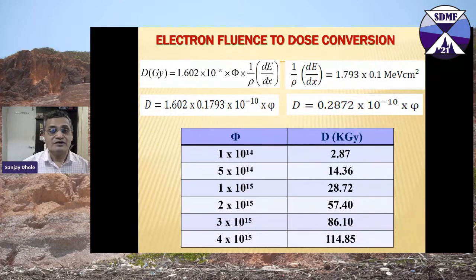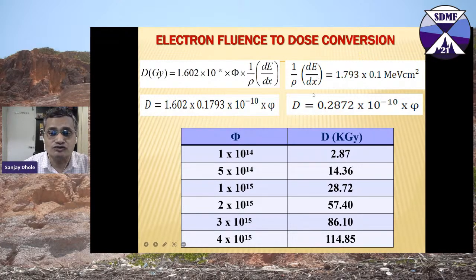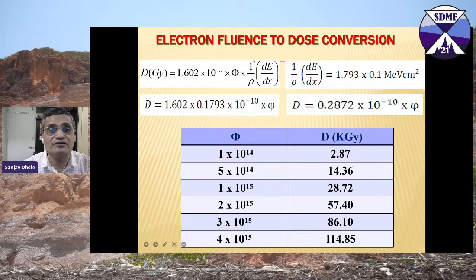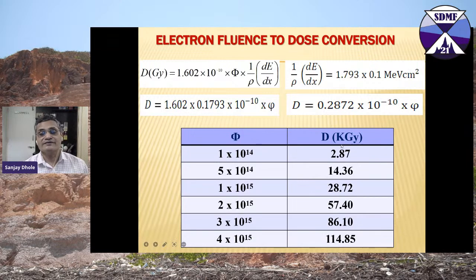There is a conversion factor for electron or ion irradiation: to convert fluence to dose in gray or rad, the formula is Dose = 1.6 × 10⁻¹⁰ × Φ × (1/ρ) × S, where Φ is the fluence, ρ is the density, and S is the stopping power calculated for the given nanophosphor material. For example, a fluence of 10¹⁴ corresponds to approximately 2.87 kilograys.